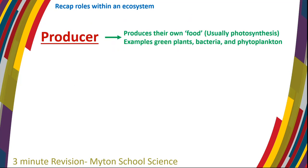The three main roles within an ecosystem we need to know are as follows. A producer that produces its own food — usually we're talking about green plants by photosynthesis, but we can also talk about types of bacteria and phytoplankton as well.